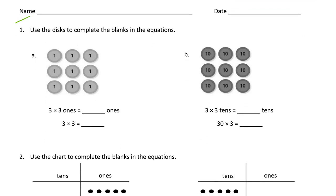We're using disks to complete the blanks in the equation. So here we're looking at ones disks, they're labeled with ones, and we have three rows of three ones. You can count them, that's nine, so three times three is nine.